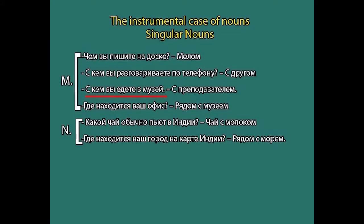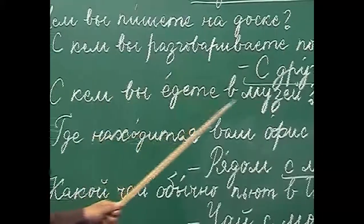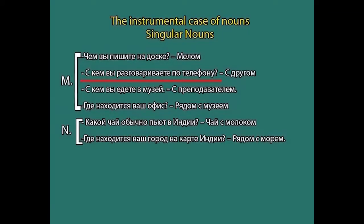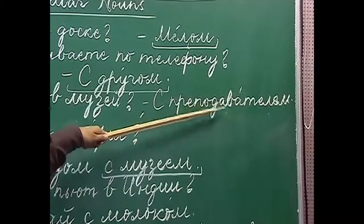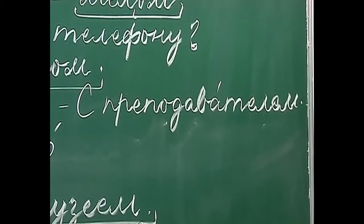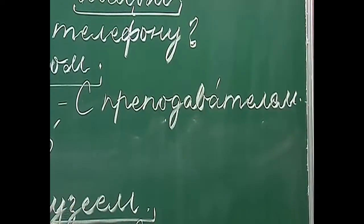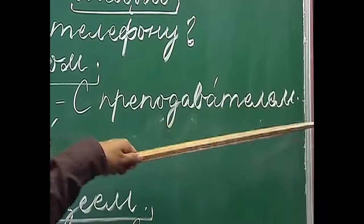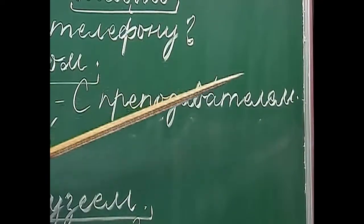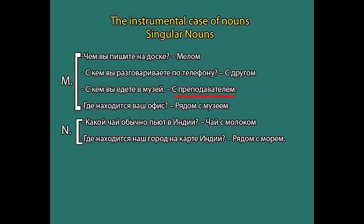The next example: 'с кем вы едете в музей?' — with whom are you going to the museum? The verb едете comes from the verb of motion ехать, which means to go or come by means of a vehicle or transport. The answer is 'с преподавателем'. If you remember, преподаватель ends with a soft consonant or a soft sign. Whenever you come across a masculine noun with a soft ending, we drop the soft sign and add -ем: преподаватель becomes преподавателем — with a teacher.